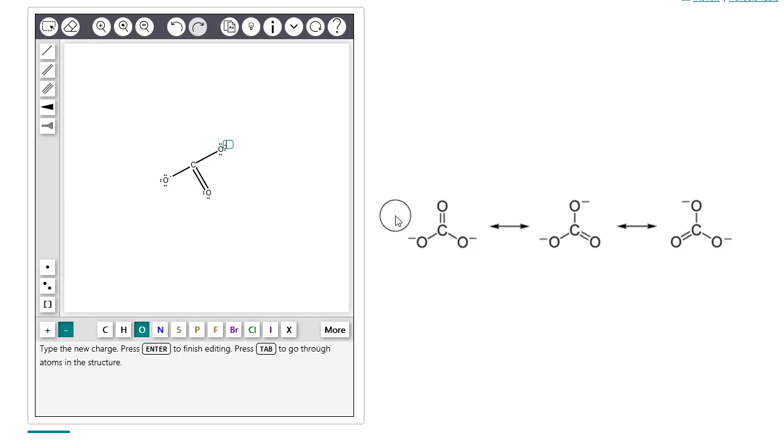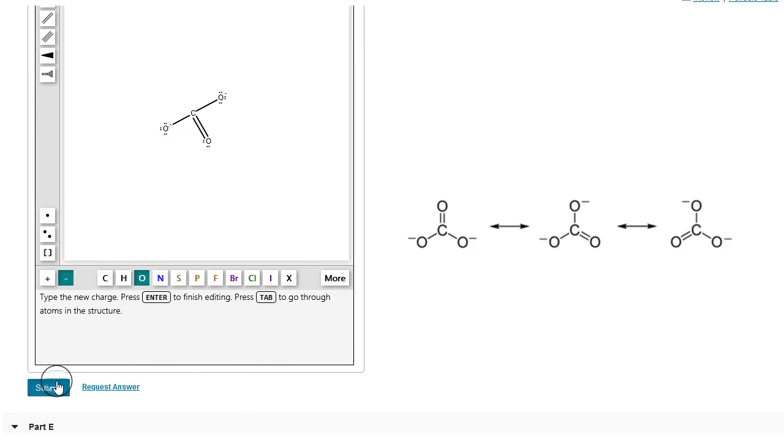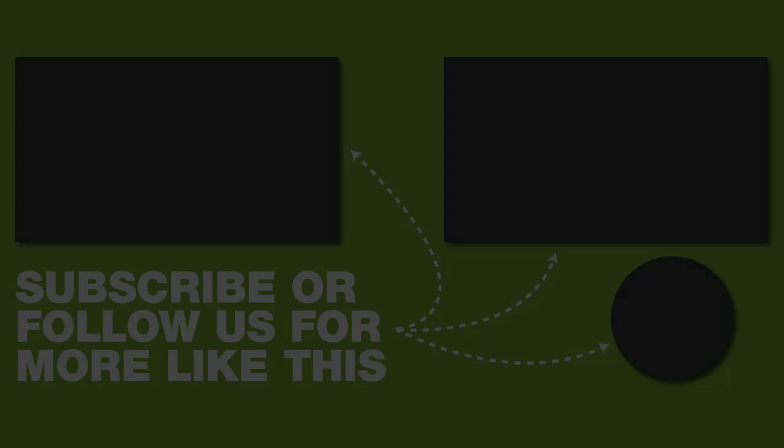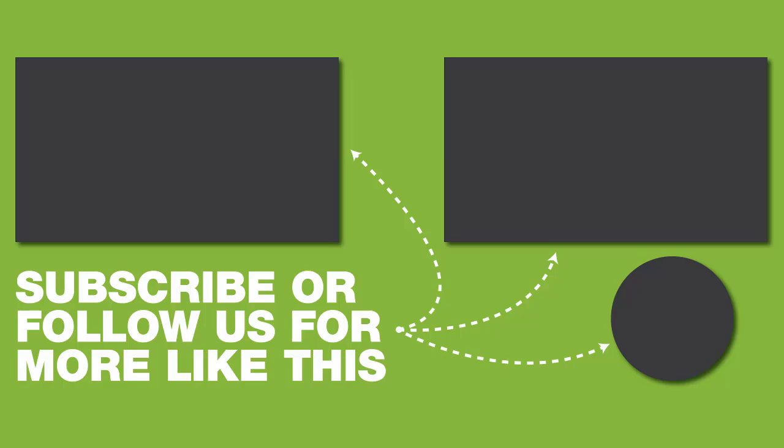Now let's scroll down and hit submit. And that's how you draw a Lewis structure in mastering chemistry using the native drawing tool.